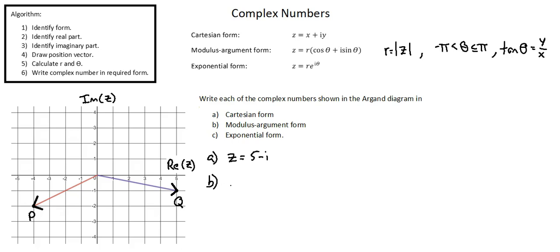B, modulus argument form: Z equals square root 26 times cosine negative 0.197 plus i sine negative 0.197.